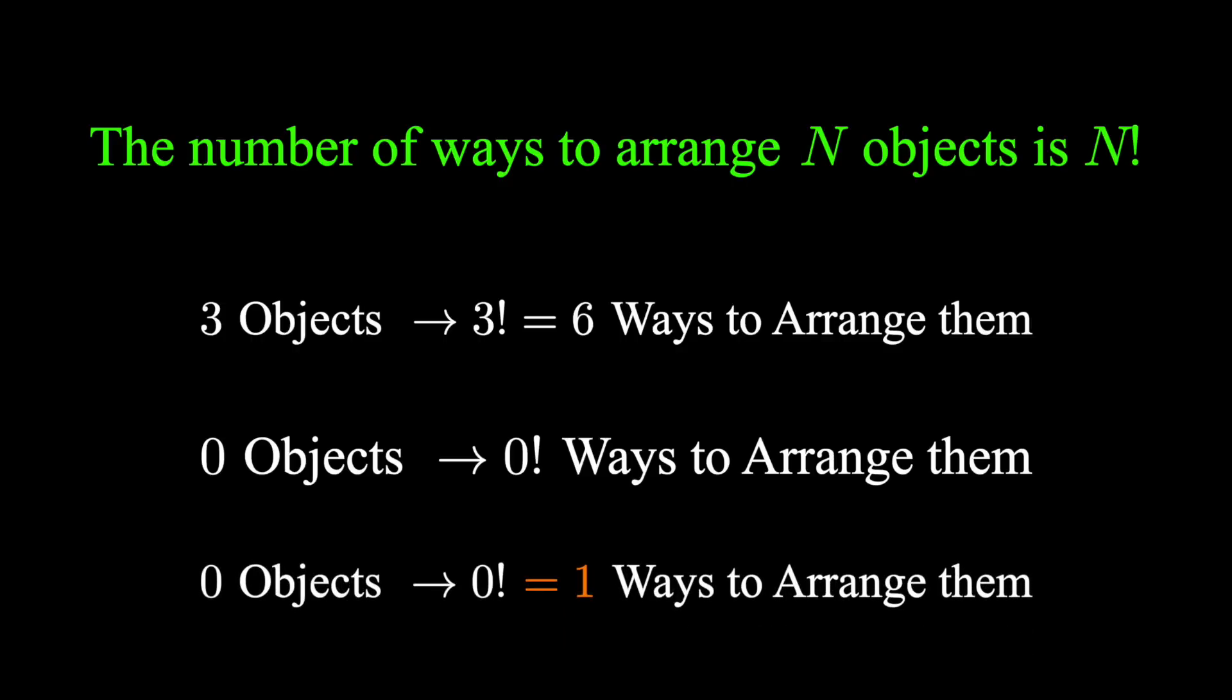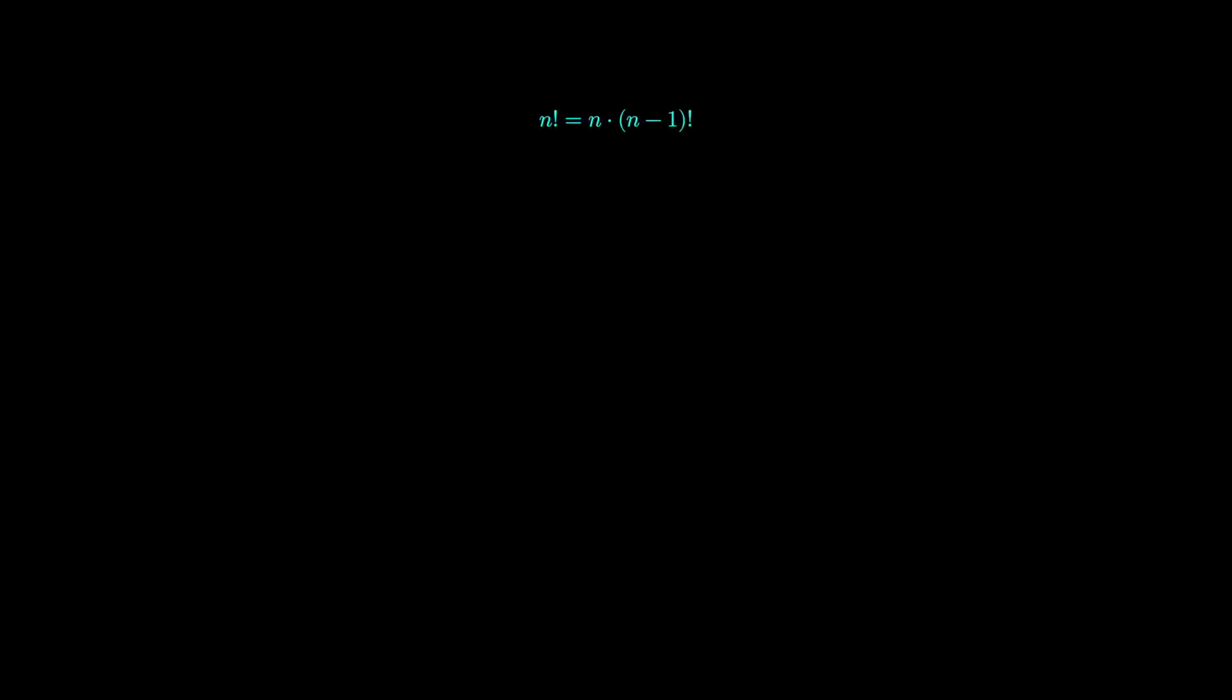Maybe you're looking for something a little more arithmetic. Another way we define factorials is through its recursive definition. n factorial is n times n minus 1 factorial.